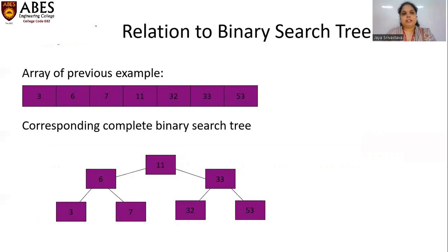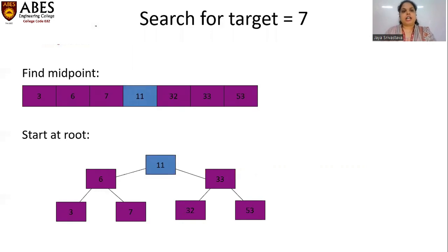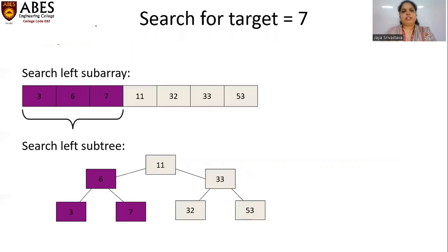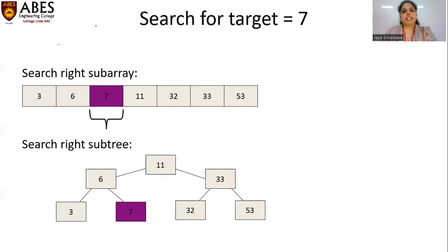Drawing the binary search tree for the array: the midpoint is index 3, with value 11 as the root. The subarray before the midpoint has midpoint value 6, and the part after has midpoint value 33. Further subdivisions give 3 and 7 on the left side, and 32 and 53 on the right side of 33. We start at the root 11, then go to the second midpoint 6 in the left subtree, and then to the right subtree of 6, where the midpoint is 7.